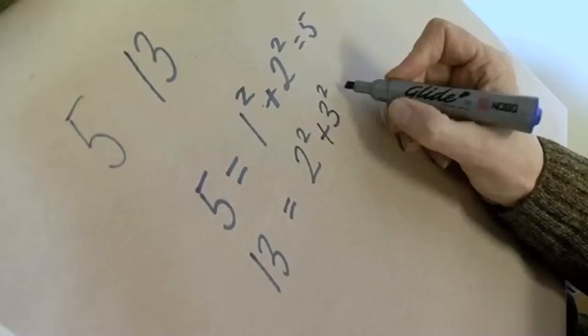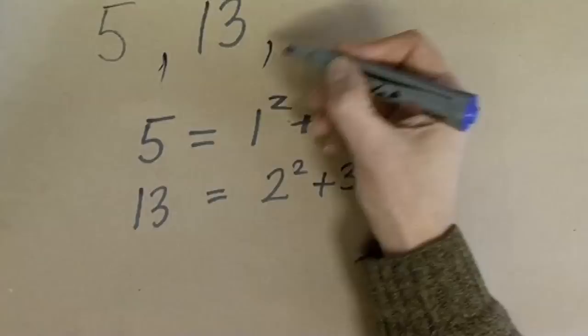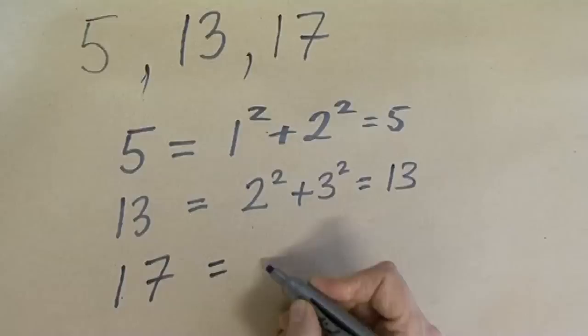So that gives me, now the next one, seventeen. Can do that as well, because seventeen is four squared plus one squared, which is another Pythagorean prime.